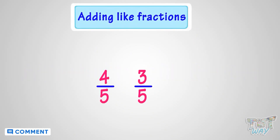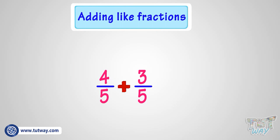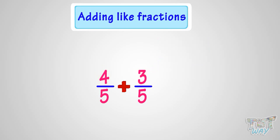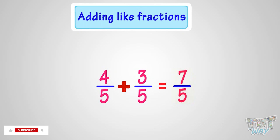Here are two fractions: 4/5 and 3/5. We have to add them. We just add the numerators of like fractions to add the fractions. So for adding 4/5 and 3/5, we just add the numerators. Adding the numerators, that is 4 and 3, we get 7. So 7/5 is the sum of 4/5 and 3/5.